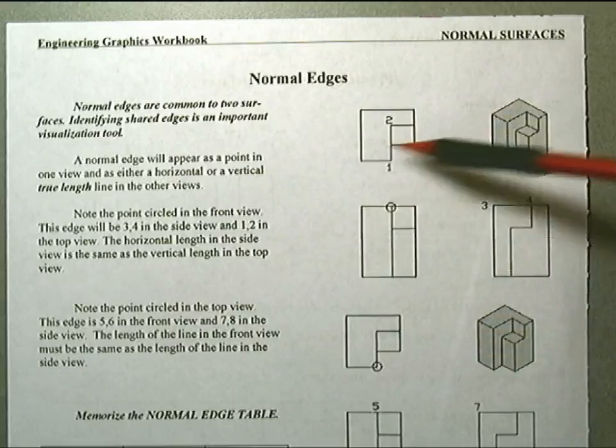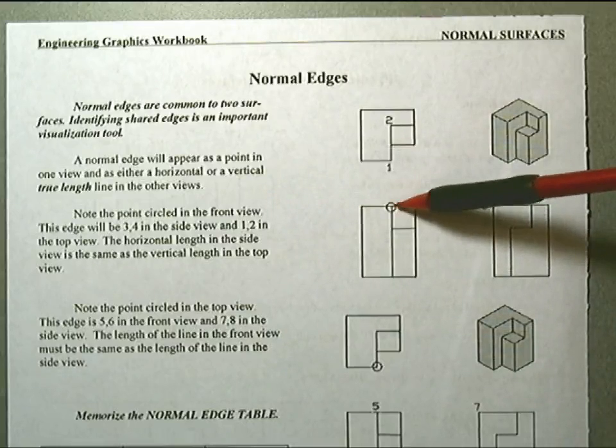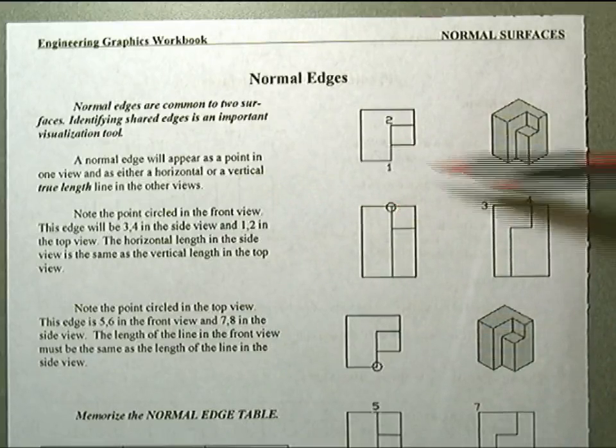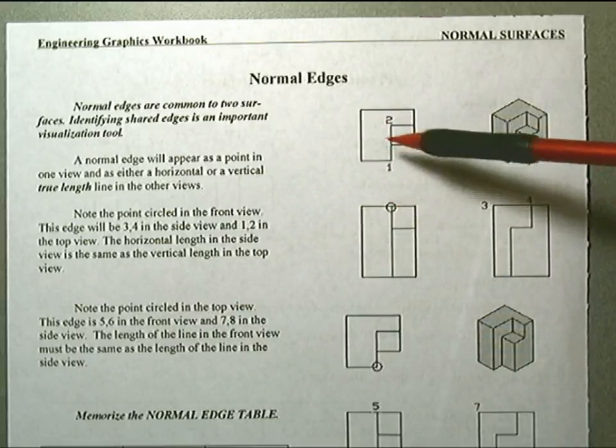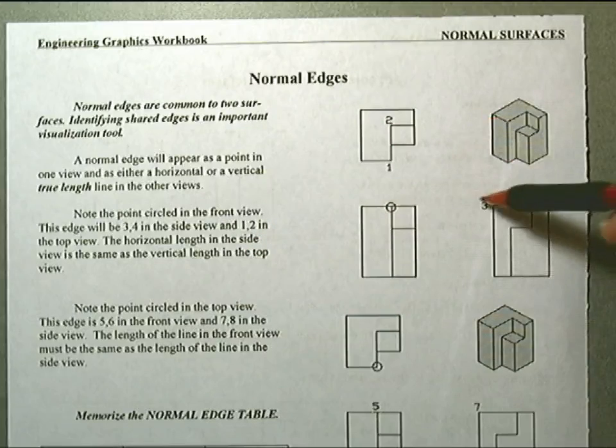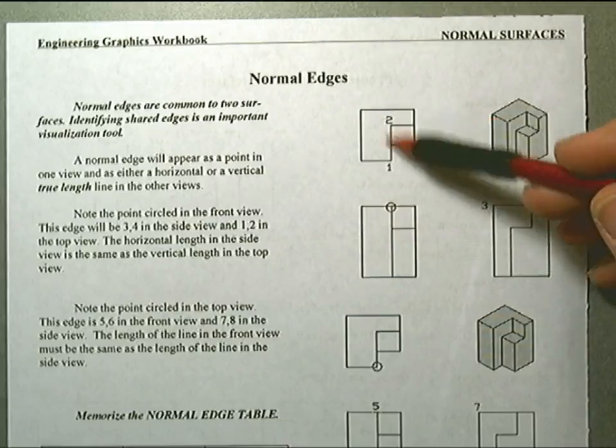Note the point circled in the front view. This edge will be 3-4 in the side and 1-2 in the top. The horizontal length in the side view is the same as the vertical length in the top view.